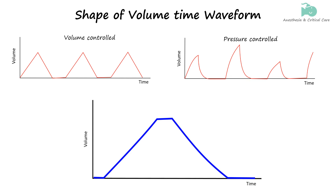Now let's study why the volume-time waveform takes the shape of a mountain. During the inspiration phase, the ventilator delivers air into the lungs, which causes the volume to increase. In volume-controlled ventilation, this increase typically appears as a linear rise on the waveform, since the ventilator is programmed to deliver a specific volume of air over a set period. The slope of this rise can vary depending on the flow rate settings — a higher flow rate results in a steeper rise.